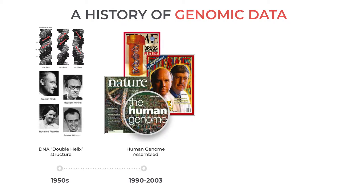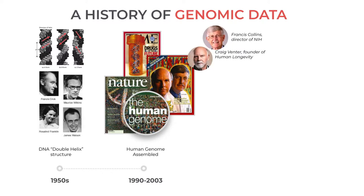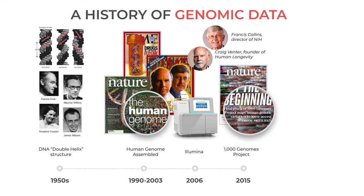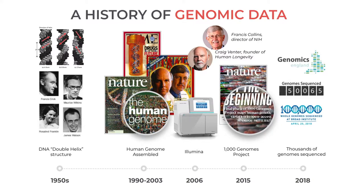Today, Francis Collins, who led the Human Genome Project, is the director of the National Institutes of Health. His main competitor at that time, Craig Venter, recently co-founded one of his many startups, Human Longevity — a company that seeks to extend human life using clues found in multi-omics data. In 2006, Illumina was launched, bringing shotgun sequencing to the masses. In 2015, the 1000 Genome Project brought a significant number of whole genome sequences to the research community. And today, in 2018, over 100,000 whole genomes were sequenced at the Broad Institute, and over 50,000 genomes at Genomics England.